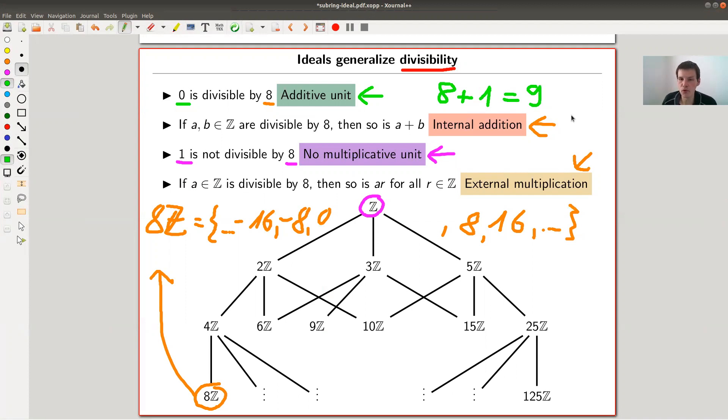In contrast, for multiplication you don't care. 8 times 1 is still divisible by 8. That's why for multiplication I want to have this property of actually a stronger property of being externally closed. Like you can multiply everything from your ring, in this case Z, to a number that is divisible by 8, and you still get a number that is divisible by 8.